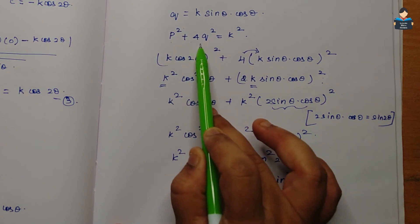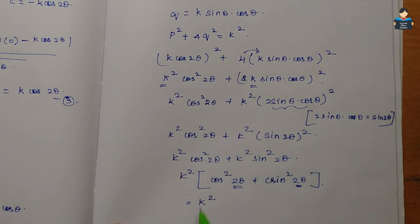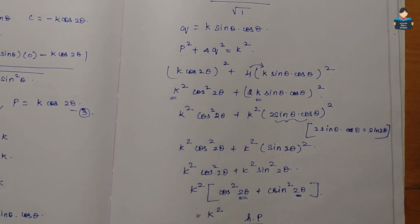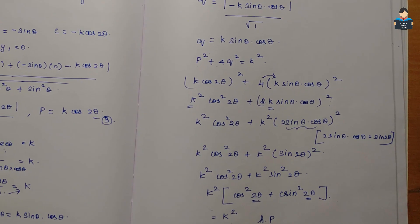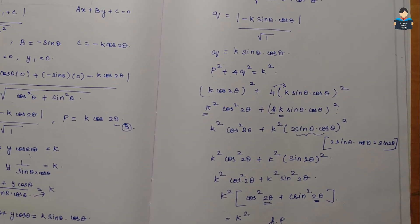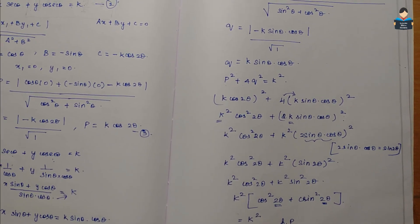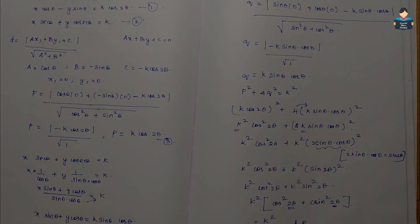So, left hand side p² + 4q² = k², which equals the right hand side. Hence proved. The 15th question is complete. In the next video, we will do the 16th and 17th questions. Thank you.